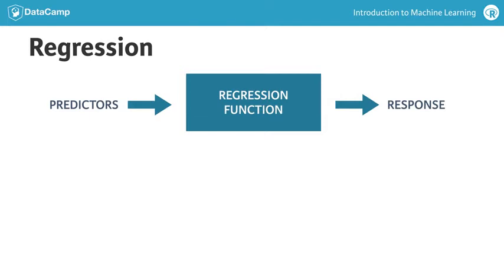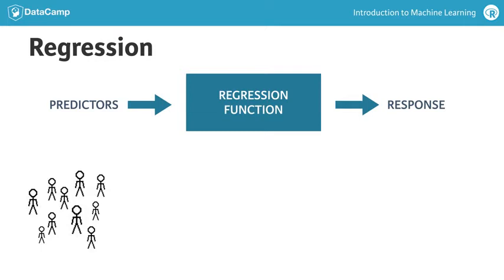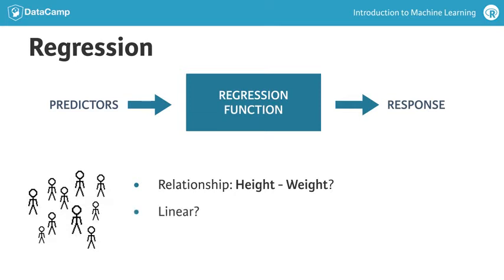Do you recall the example from the last video? There, we had a data set on a group of people's height and weight. A valid question could be: is there a relationship between the height and the weight? For example, will a change in height correlate linearly with a change in weight? And if so, can you predict the height of a new person given their weight? These questions can be answered with linear regression.